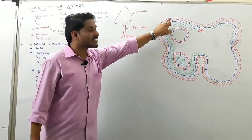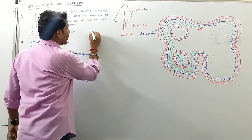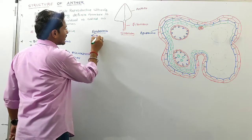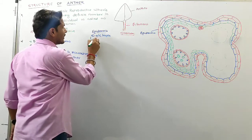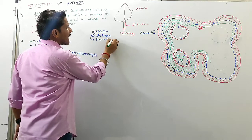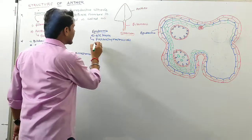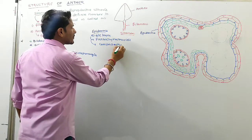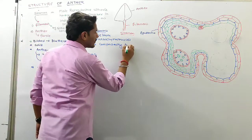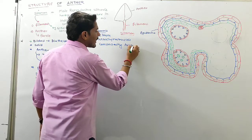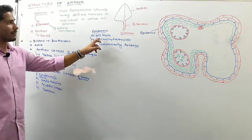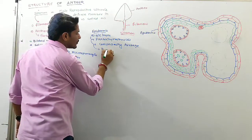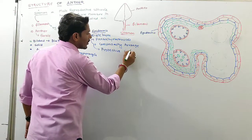Epidermis is single layered and is made up of parenchymatous cells. Cells of epidermis are compactly arranged. The function of epidermis is protective in nature — it protects the internal structure of the anther.